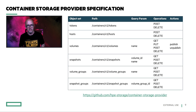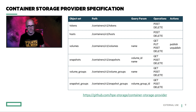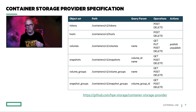The container storage provider specification is an open specification, just like the CSI specification. The HPE CSI driver is open source and available on GitHub. These are the handful of endpoints you need to implement in your container storage provider to allow dynamic provisioning, creating snapshots, creating clones, and so forth. Only the top three are mandatory: you need some sort of authentication with a token endpoint, a way to add hosts from your Kubernetes cluster, and the volume endpoint. All snapshot, snapshot group, and volume group endpoints are completely optional.